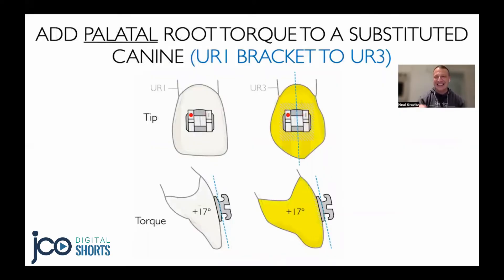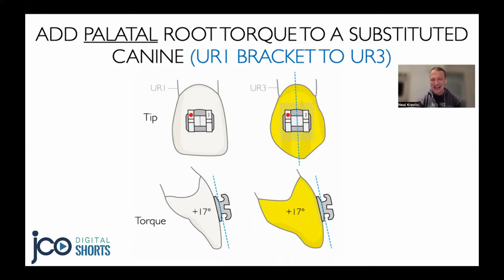Another example of bracket substitution occurs during a canine lateral substitution. Many people like to put a lateral incisor bracket on a substituted canine because the tooth is in the lateral incisor position. I prefer to use a flatter central incisor bracket, which has much more palatal root torque — 17 degrees of palatal root torque — to hide those prominent canine roots. Remember, we're dealing with a flat bracket base, so we need to do enameloplasty.